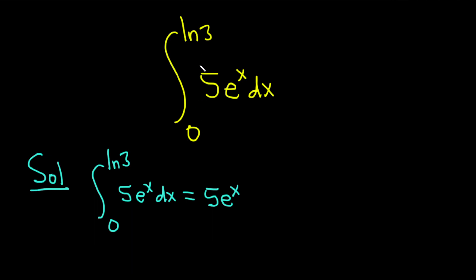This is a definite integral, so we don't have to write the plus c. So I'll put a little bracket here and then this number goes down here, the 0, and the ln 3 goes up here.